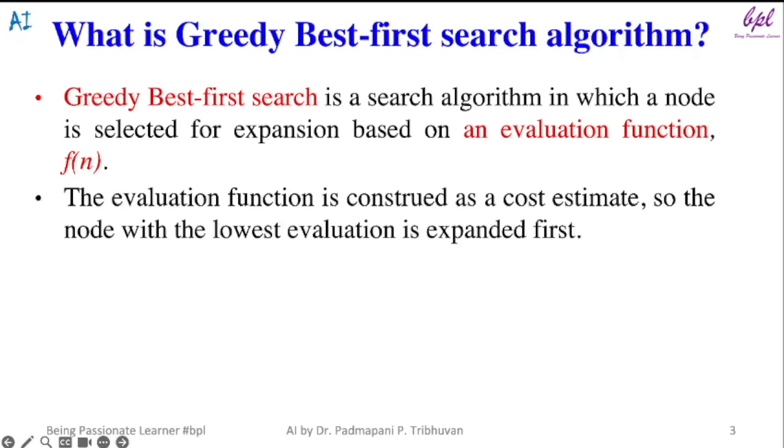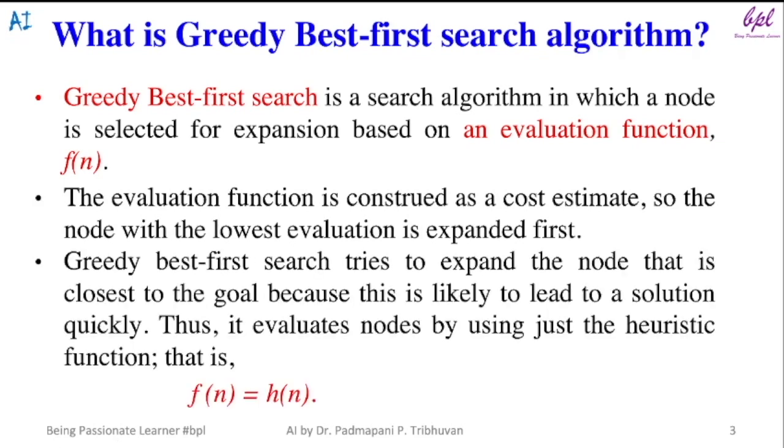where n represents a node. The evaluation function is constructed as a cost estimate, so the node with the lowest evaluation is expanded first. Greedy Best-First Search tries to expand the node that is closest to the goal because this is likely to lead to a solution quickly.